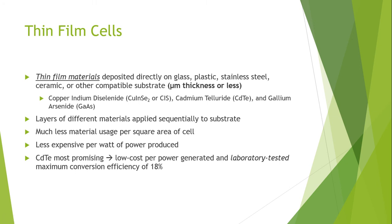Cadmium telluride thin film solar structures are the most common type of available thin film structures because they are less expensive than the more standard silicon thin film cells. After improvements, the recorded efficiency of cadmium telluride has increased from 18 percent to 22.1 percent. This efficiency represents the percentage of photons hitting the surface of the cell that are transformed into electrical energy.